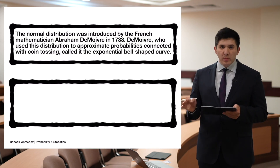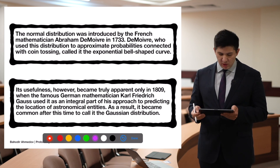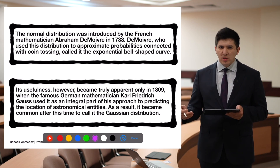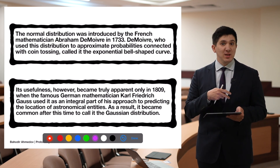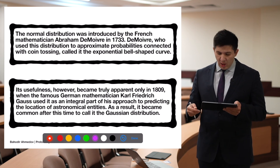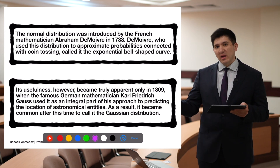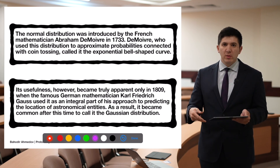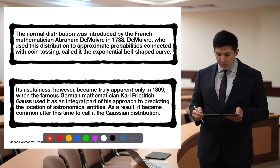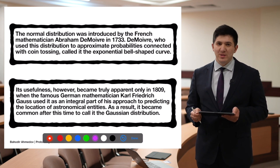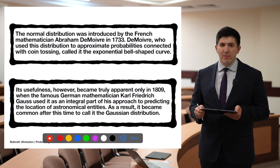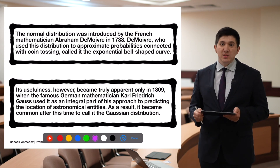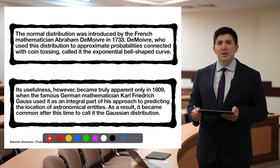Some historical notes: the normal distribution was first introduced by French mathematician Abraham de Moivre in 1733, mostly to understand distributions from coin tossing. Later, German mathematician Carl Friedrich Gauss used it in calculations of astronomical locations, after which it became very popular and people began calling it the Gaussian distribution, even though Gauss used it after de Moivre. The normal distribution will be used extensively throughout the rest of our topics.